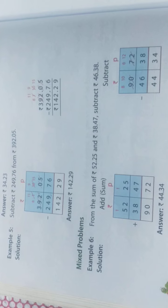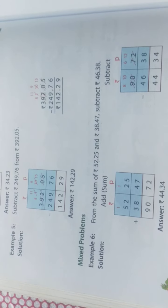Now, mixed problems. You know how to add only or subtract only, but there will be mixed problems also in this chapter. Example 6: from the sum of 52 rupees 25 paise and 38 rupees 47 paise, subtract 46 rupees 38 paise.